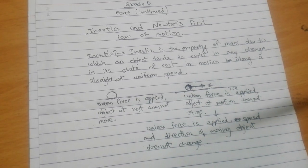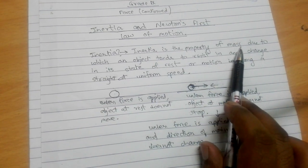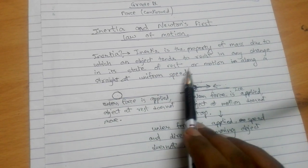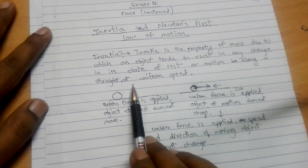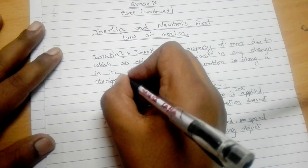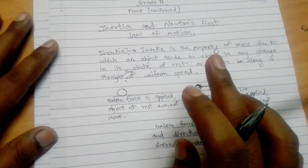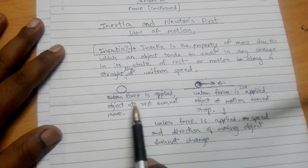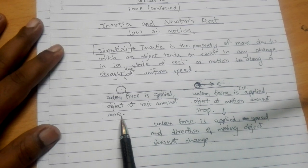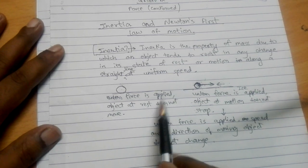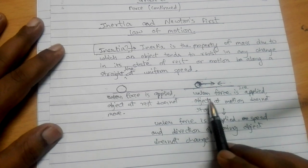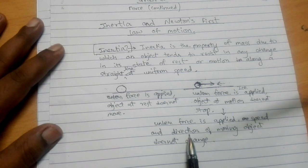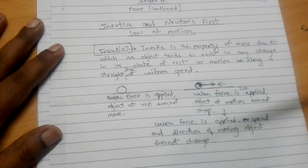This is not very hard to understand. Inertia is a property of mass due to which an object tends to resist any change in its state of rest or motion along a straight line at uniform speed. This is called inertia. If an object is at rest, it does not move unless force is applied. And if an object is in motion, it does not stop, change direction, or change its speed unless force is applied.